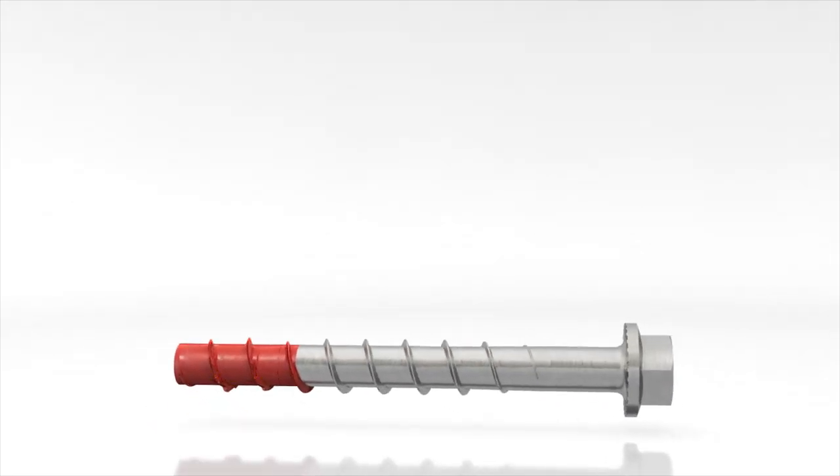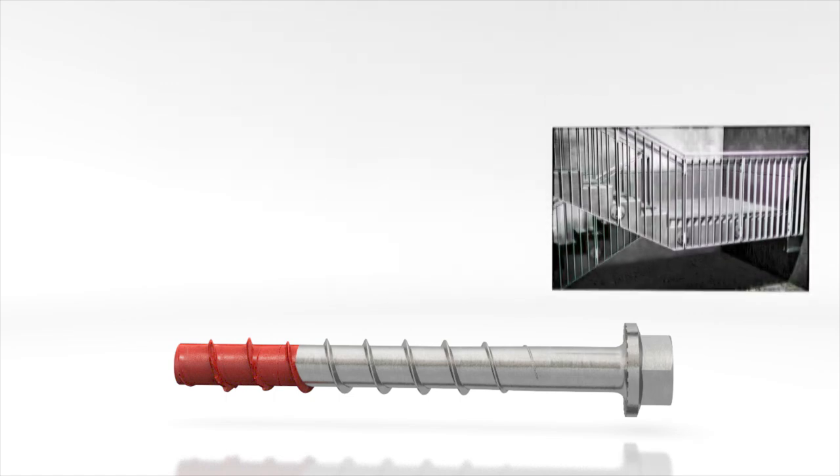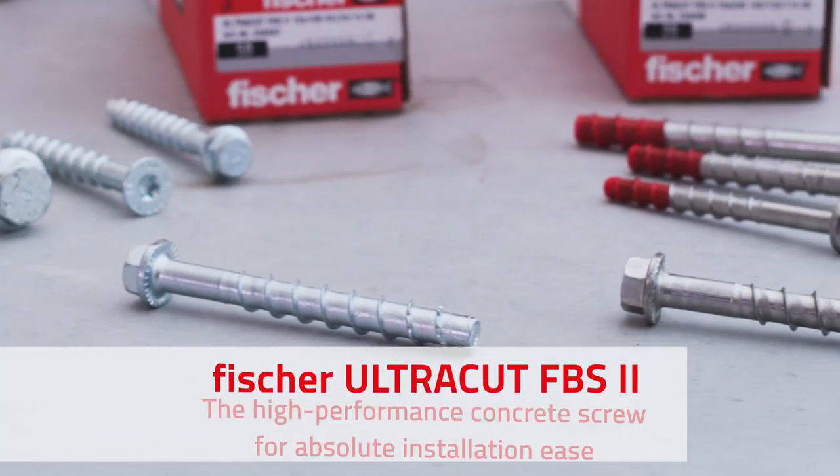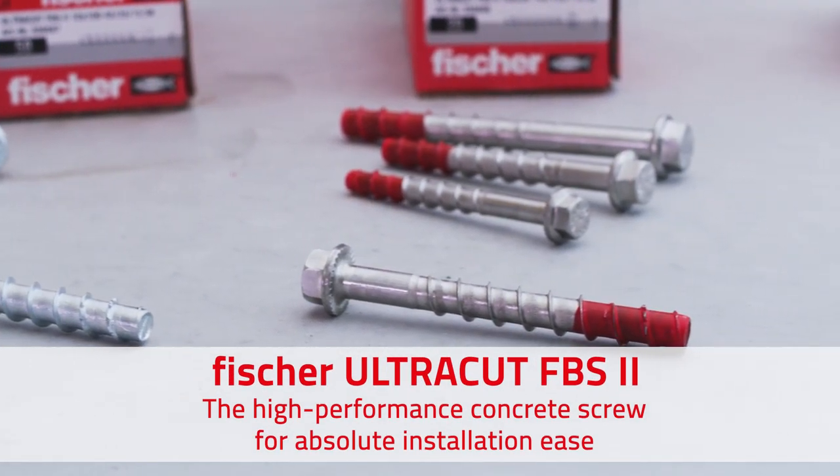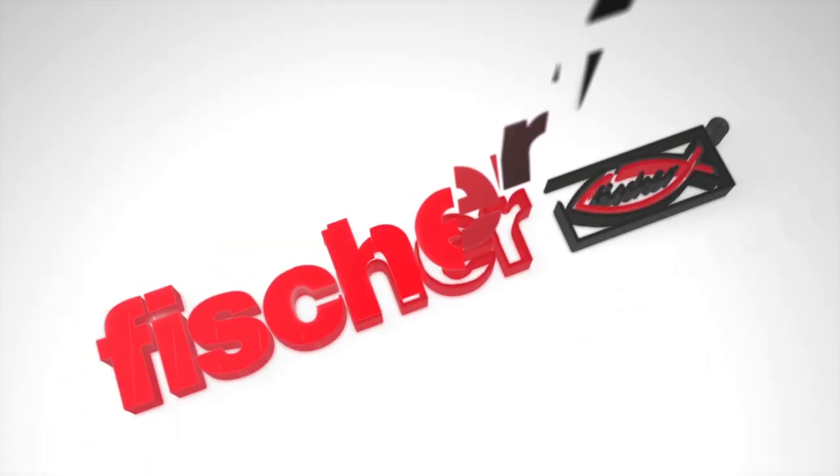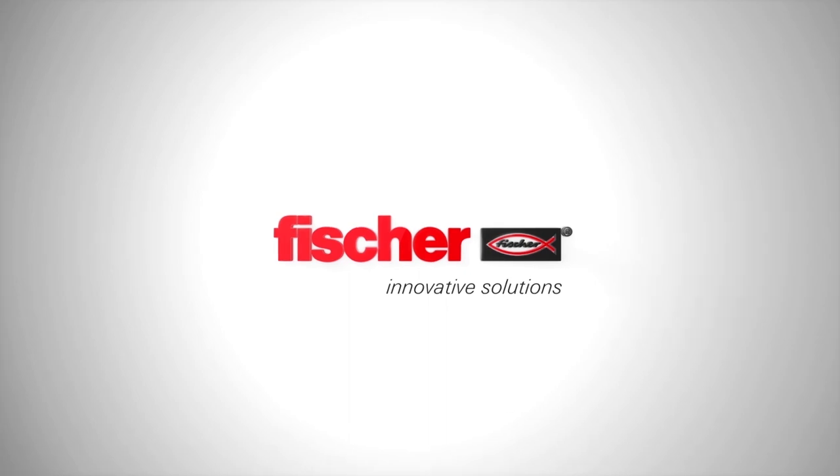For example: railings, consoles, canopies, stadium seating, and more. Fischer Ultracut FBS2—the high-performance concrete screw for absolute installation ease.